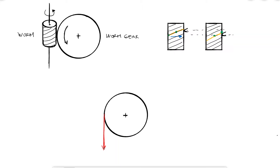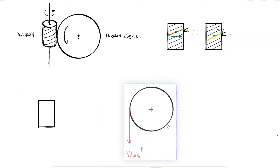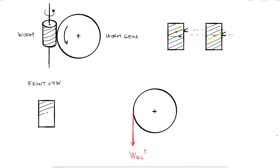So the tangential force would be W sub WG, as it's the force coming from the worm to the worm gear. If I look at the front view of the worm, I'd see that the reaction force W_GW would be going up, and here we find one of the main differences.